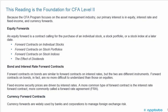There can be forward contracts on individual stocks, forward contracts on stock portfolios, forward contracts on stock indices — and you have to understand the effect of dividends. We also look at bond and interest rate forward contracts. Forward contracts on bonds are similar to forward contracts on interest rates, but the two are different instruments; forward contracts on bonds are no more difficult to understand than those on equities. Fixed income security prices are driven by interest rates. A more common type of forward contract is the interest rate forward contract, more commonly called a forward rate agreement (FRA). Finally, we'll look at currency forward contracts, which are widely used by banks and corporations to manage foreign exchange risk.